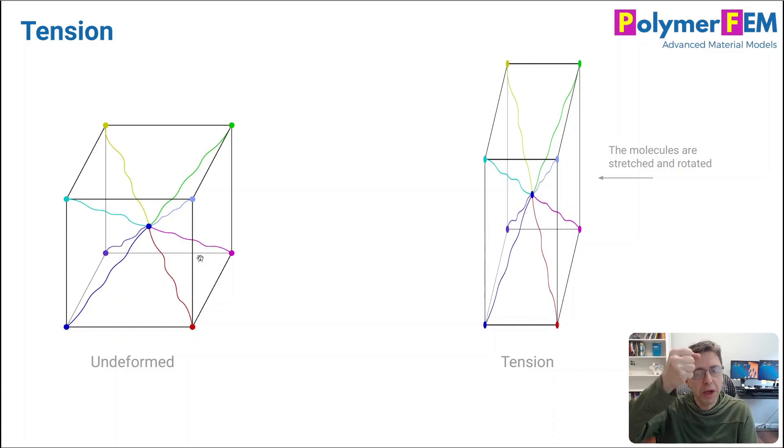If you take this cube and pull on it, what this model says is that the model cubes will then rotate with this cube. And so they will be stretched on average and they will rotate towards the direction in which the cube was pulled. And that makes a lot of sense. That's intuitive. That's what the molecules will do.